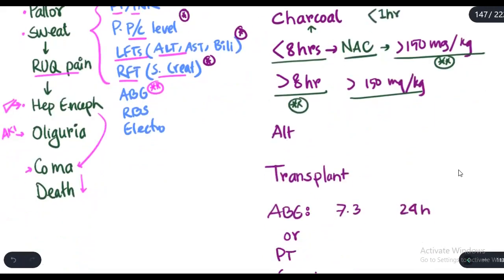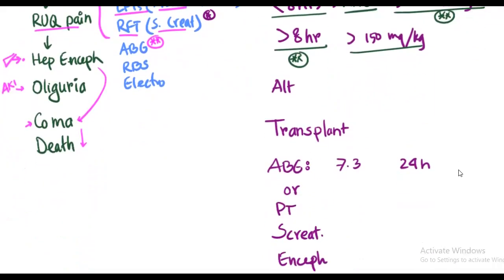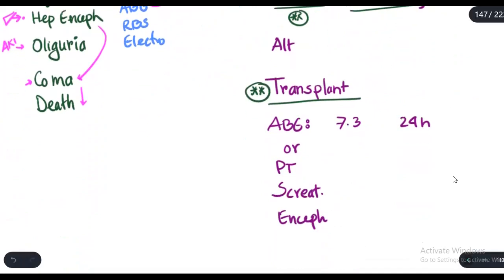So when should we consider alternative treatments? The best treatment for paracetamol overdose is transplant, but there are specific criteria when we should consider a person for transplant. Those criteria are ABG, PT, serum creatinine, and encephalopathy. First, the ABG. If the ABG shows the pH is less than 7.3 after 24 hours of ingestion, then this is the single most important criteria for putting the patient on the transplant list.